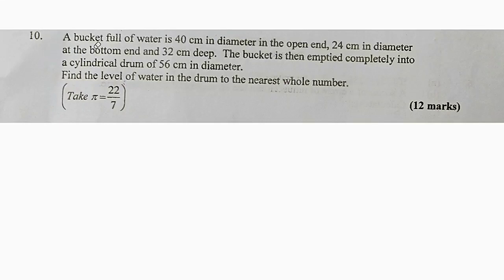Question number 10. A bucket full of water is 40 cm in diameter at the open end, 24 cm in diameter at the bottom end, and 32 cm deep. The bucket is then emptied completely into a cylindrical drum of 56 cm in diameter. Find the level of the water in the drum to the nearest whole number. We are asked to take pi as 22 divided by 7.